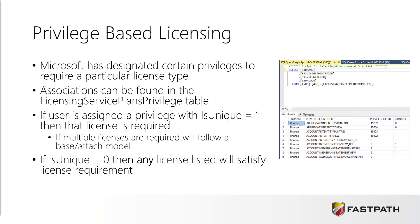There's also a parameter called is unique on that association. That basically determines whether or not the user would be required to have that particular license if they are assigned that privilege, based on the user to role to duty to privilege hierarchy structure. Microsoft is looking across all the privileges that the user is assigned based on their current access and then determining which privileges are assigned and therefore what licenses are required, keeping in mind the is unique flag. If is unique is one, then the user is required to have that license in a base and an attached scenario. If is unique is zero, then any license would suffice — any of the base licenses would meet the requirements.